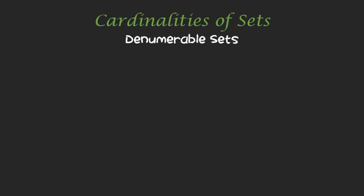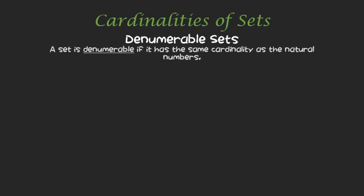The first term we come across is the idea of a denumerable set. Just look at the word — denumerable, of the numerals. So that means it's the same size as the counting numbers, as the natural numbers. That's exactly what the definition is: it has the same cardinality as the natural numbers. This definition of same cardinality means that there exists a bijective function F from the natural numbers to whatever set S we want to show is denumerable.